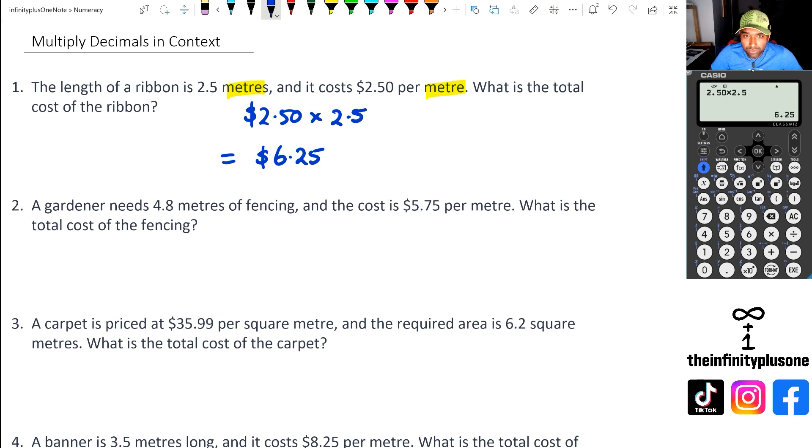Looking at question number two, we've got 4.8 meters of fencing and $5.75 per meter. So we're going to go 5.75 multiplied by 4.8. Using the calculator for this, we've got 5.75 multiplied by 4.8, and that's going to give us $27.60. Now really important that we put that 60 cents and not just leave it as 27.6.